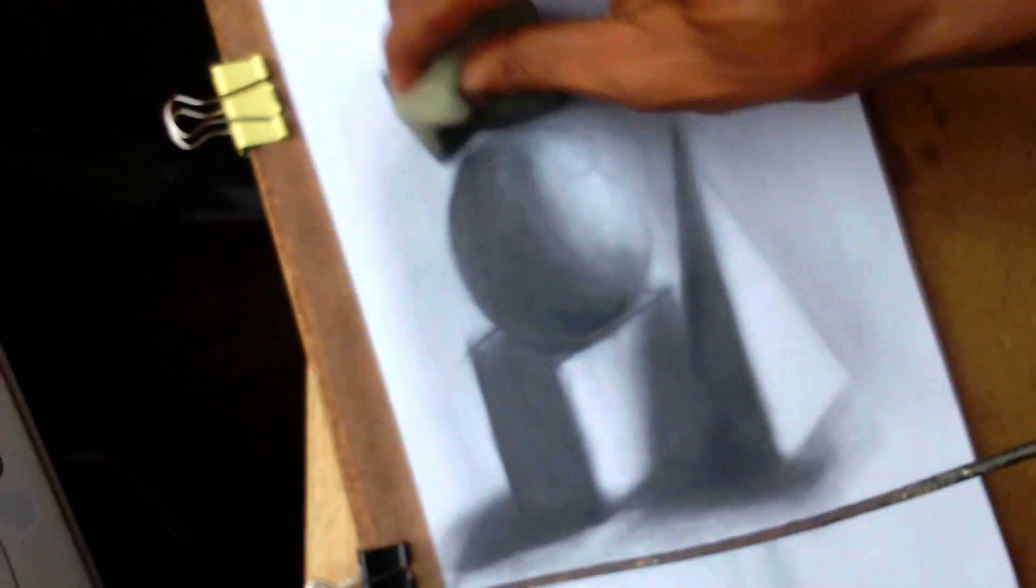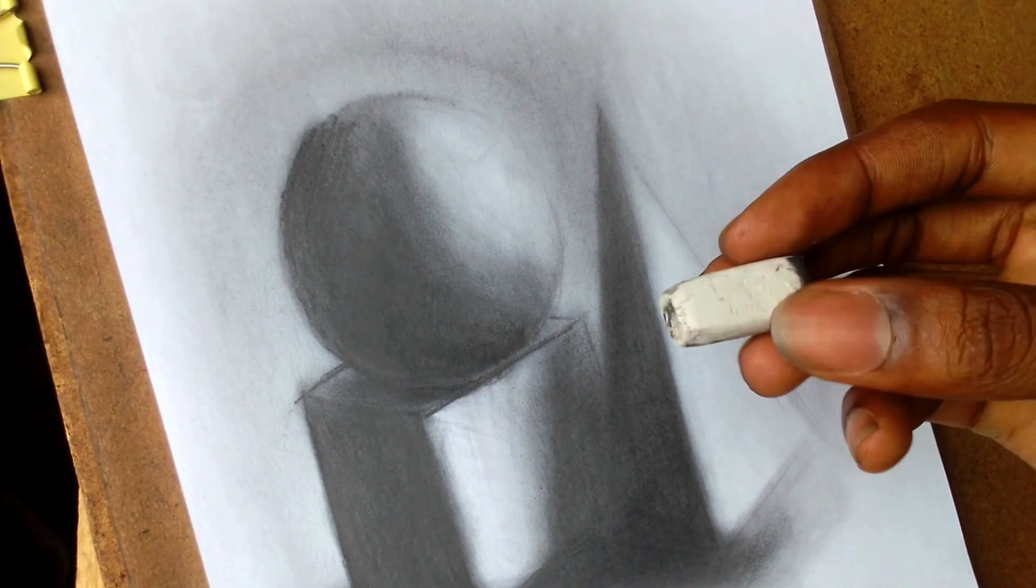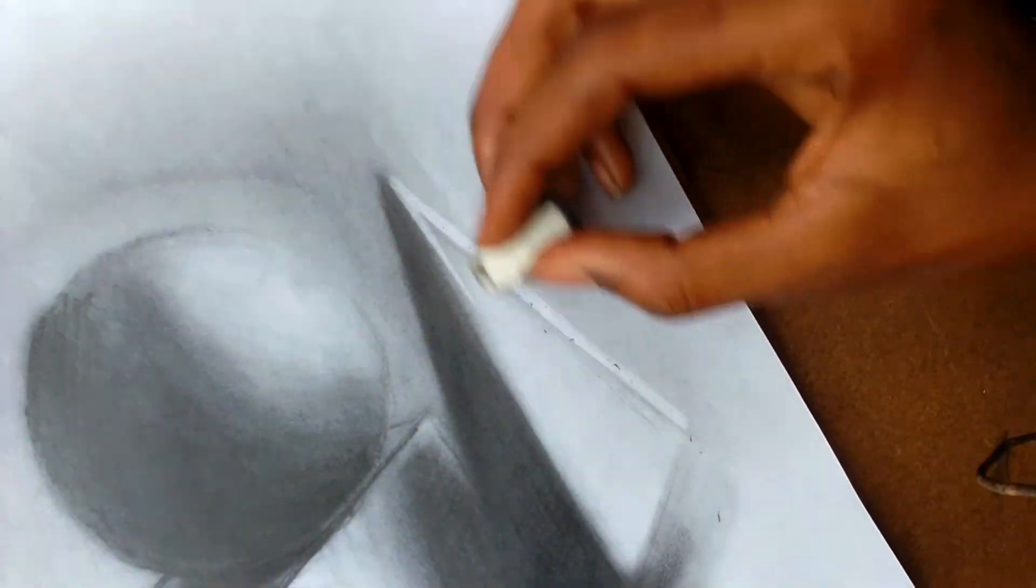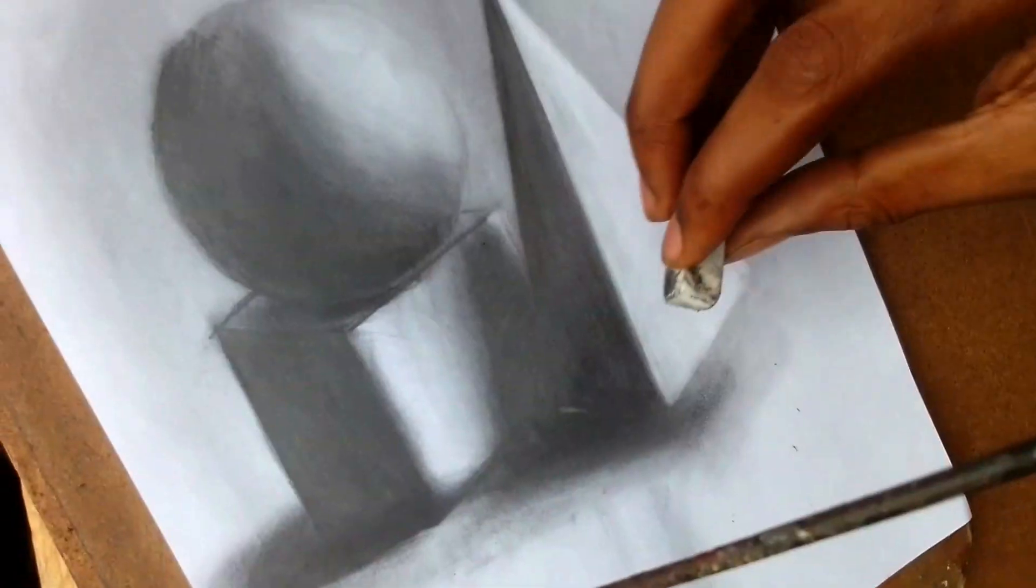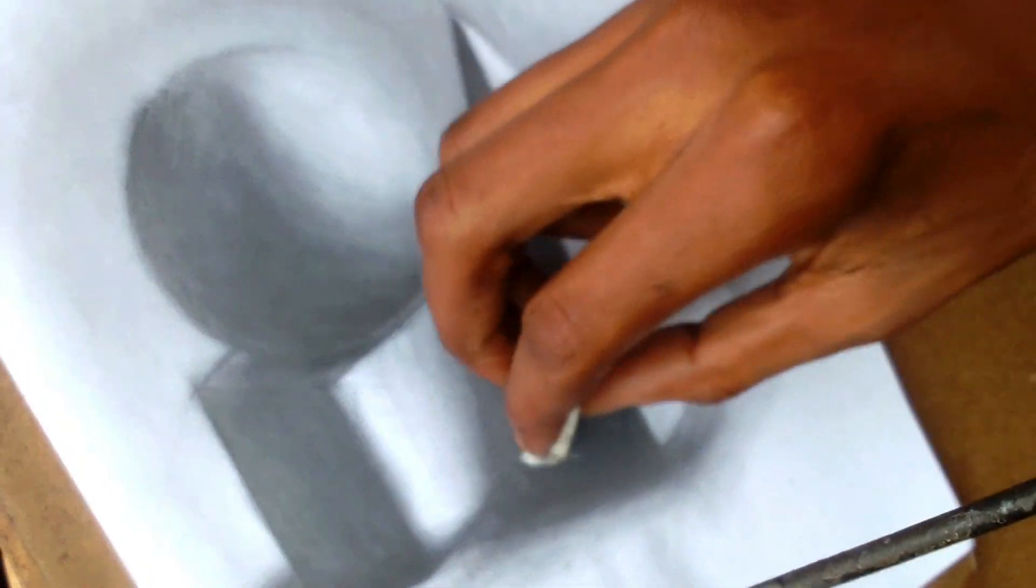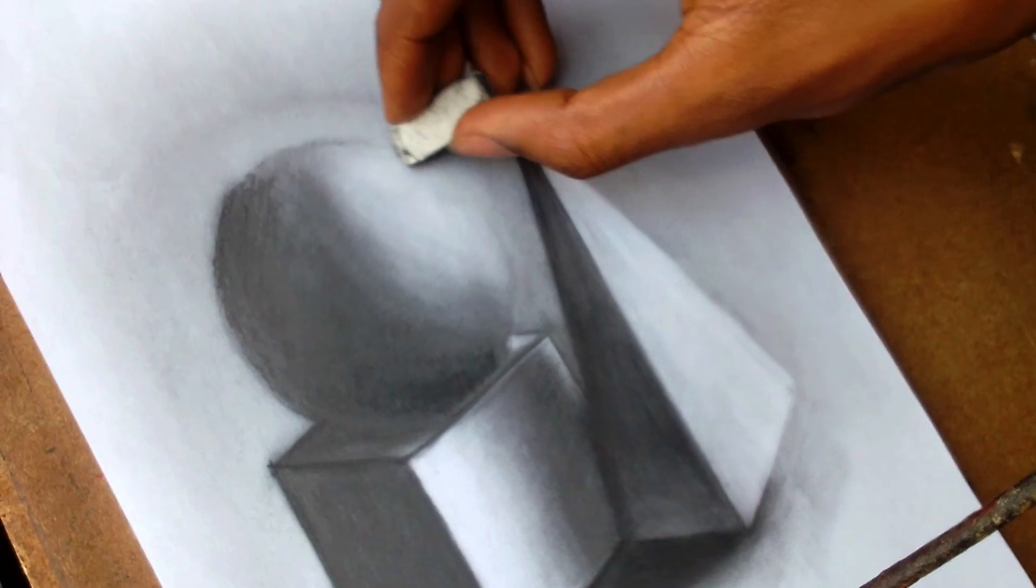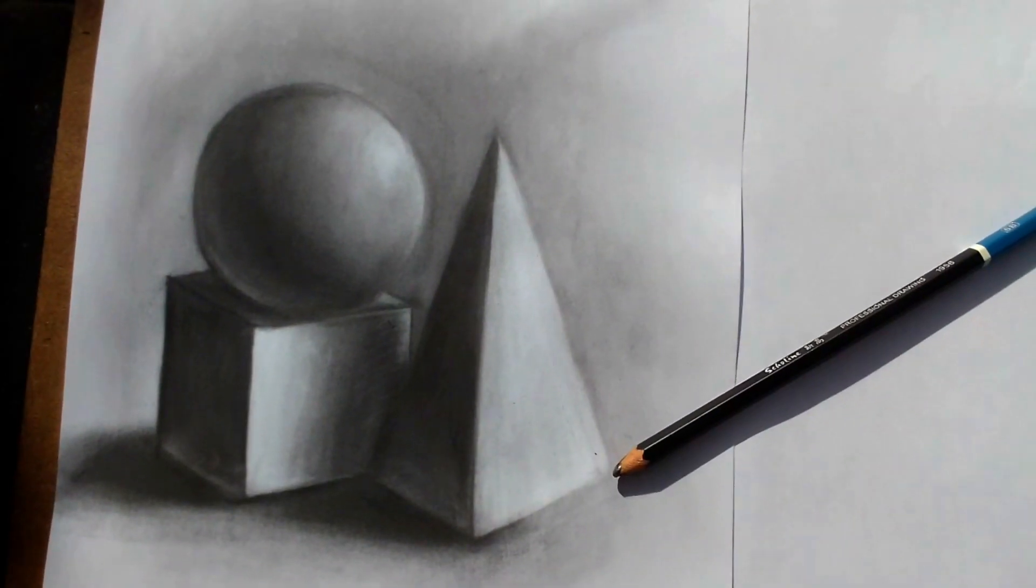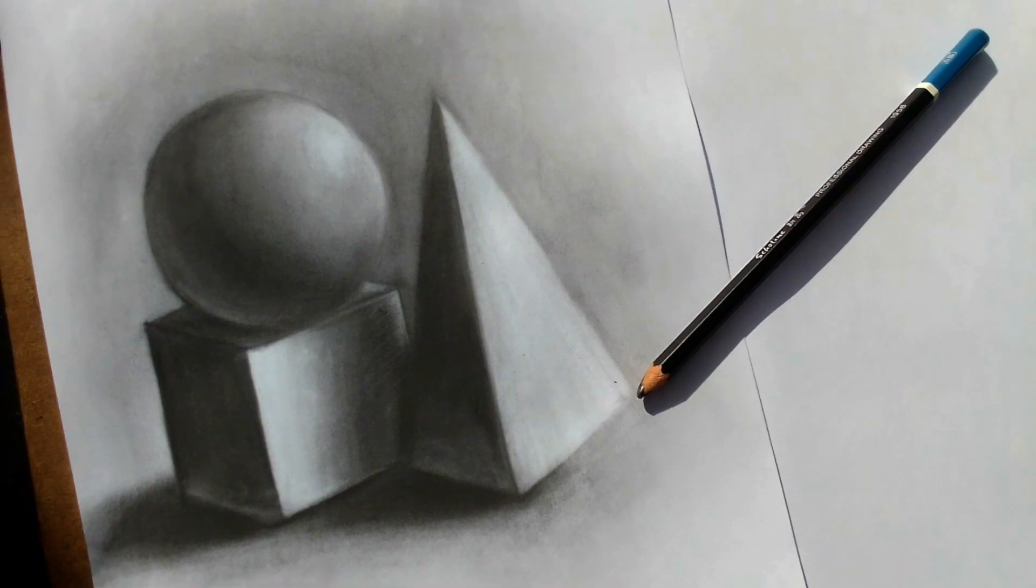After doing that, I get my eraser and start pointing out the highlights. I make sure that the reflected light we talked about is added in to those drawings. And there you go. Simple shapes. You can use this technique however you want for many objects, cups. I hope this video helped you in some way.